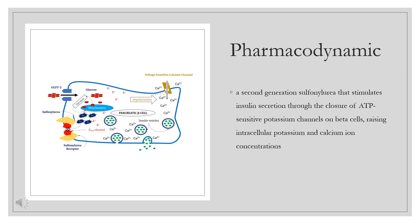Pharmacodynamics. Glyburide is a second-generation sulfonylurea that stimulates insulin secretion through the closure of ADP-sensitive potassium channels on beta cells, raising intracellular potassium and calcium-ion concentrations. Glibenclamide has a long duration of action as it is given once daily, and a wide therapeutic index as patients are started at doses as low as 0.5 mg, but that can increase as high as 10 mg or more. Patients taking glyburide should be cautioned regarding an increased risk of cardiovascular mortality, as seen with tolbutamide, another sulfonylurea.